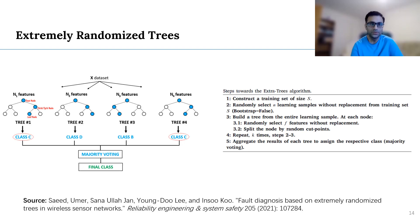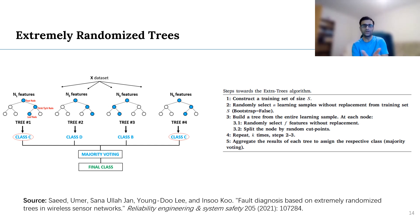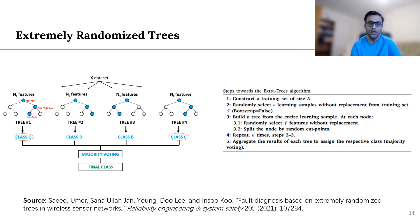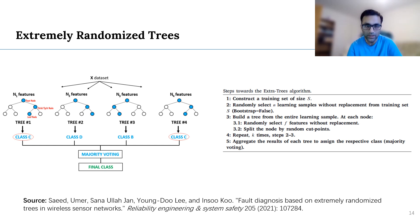In this figure we are going to look at how extremely randomized trees work, which is the main focus of this work. In extremely randomized trees, different trees are trained using the same dataset but having a different set of features. For example, tree number one is trained using feature set n1, tree number two is trained using feature set n2, and so on. The testing sample is input to each one of these trees where they make a decision about which class the input sample belongs to. All the outputs are then collected and a majority voting system is used to decide the final output. You can see the steps toward the extra trees algorithm on the right hand side.